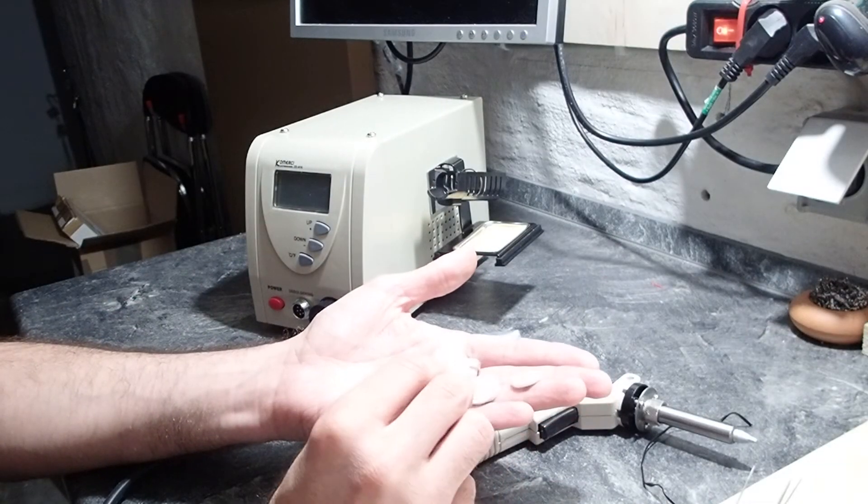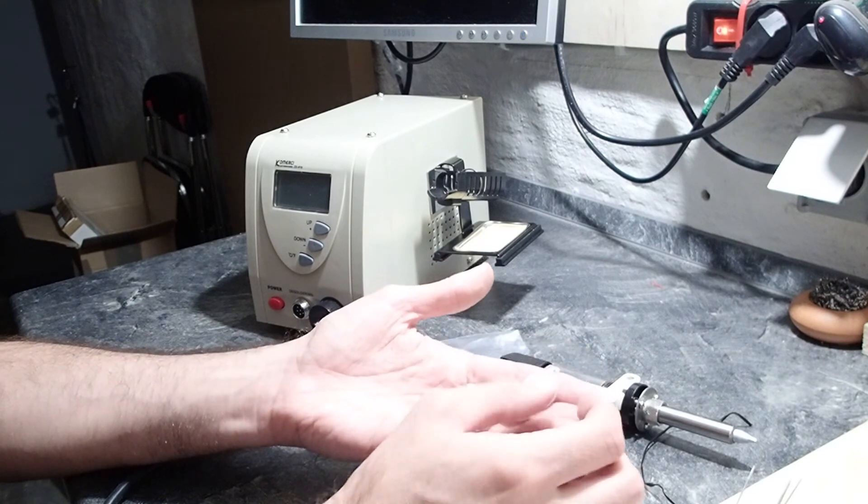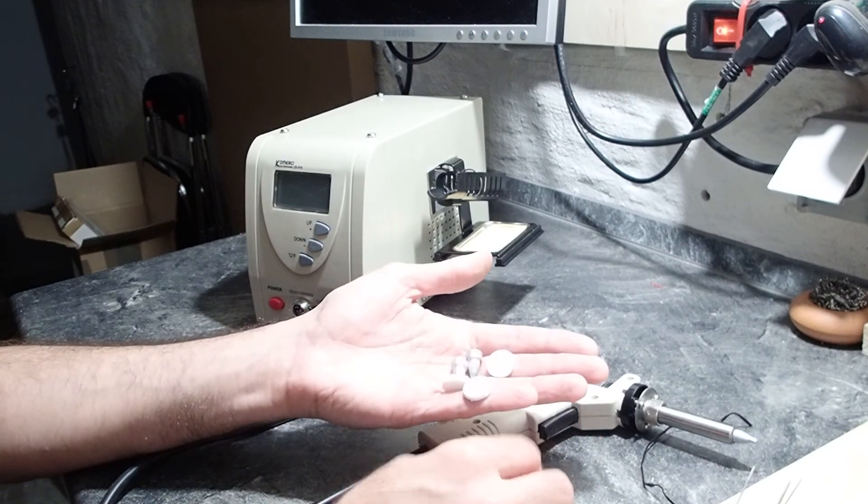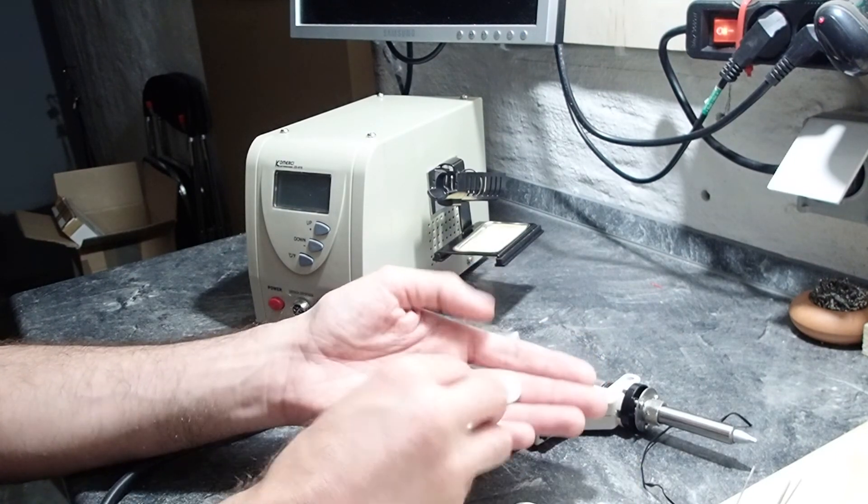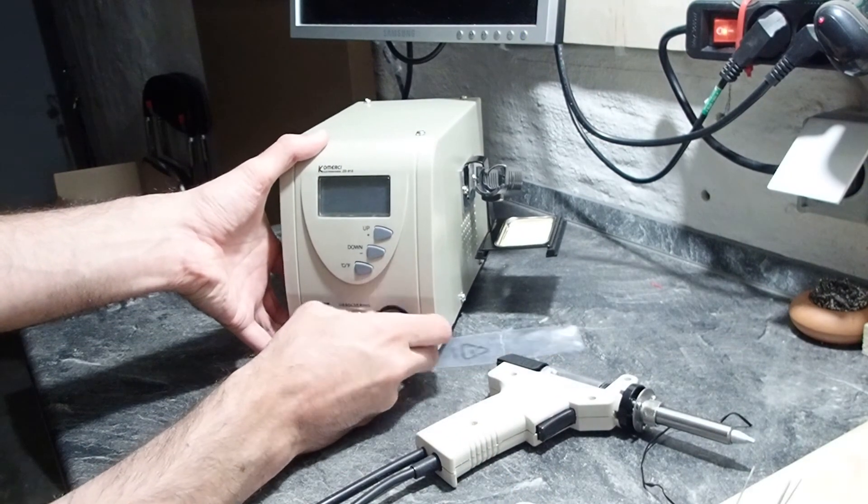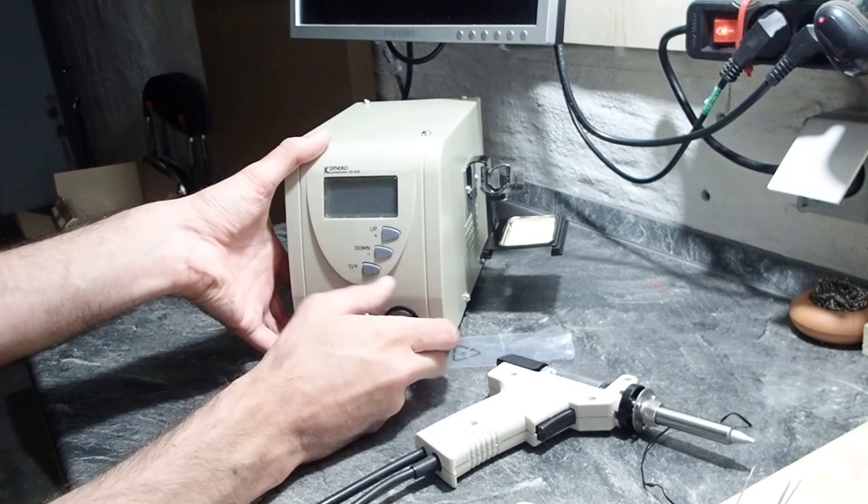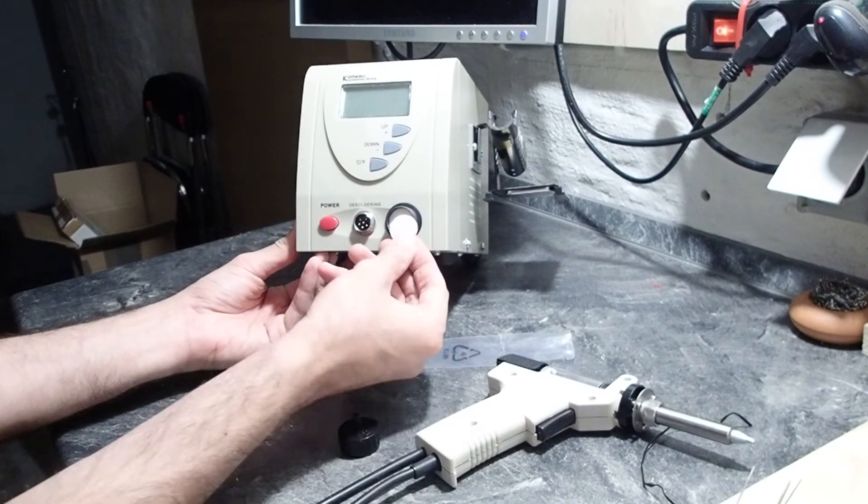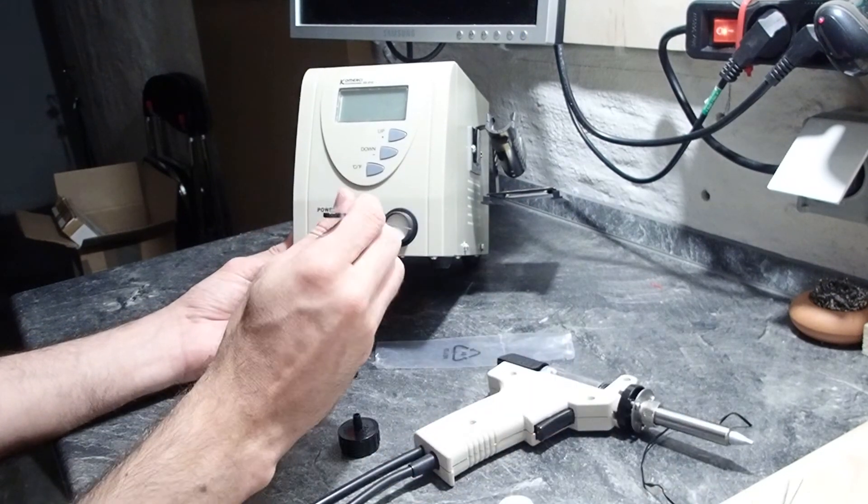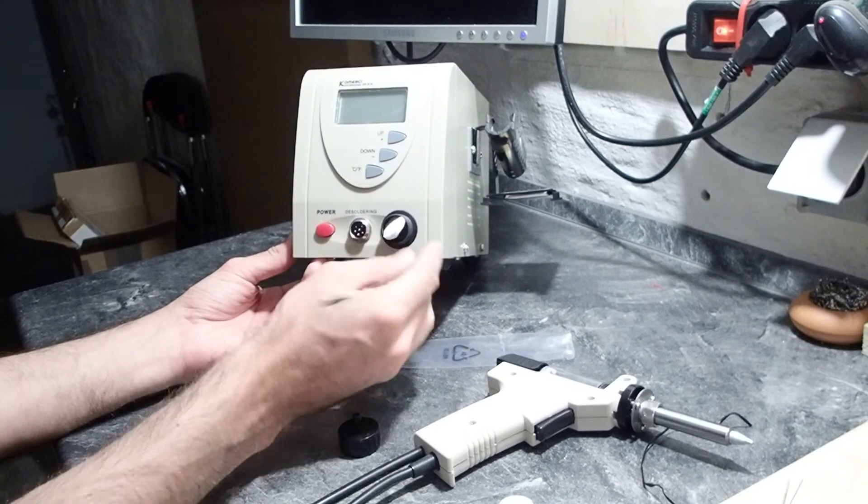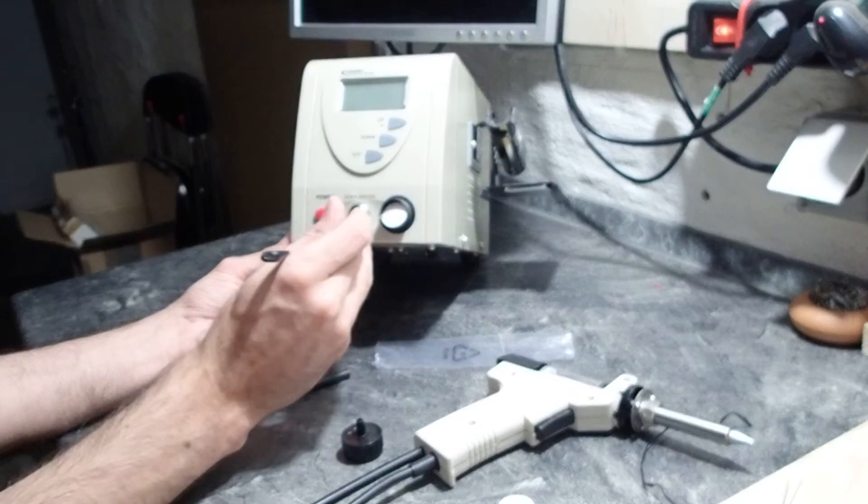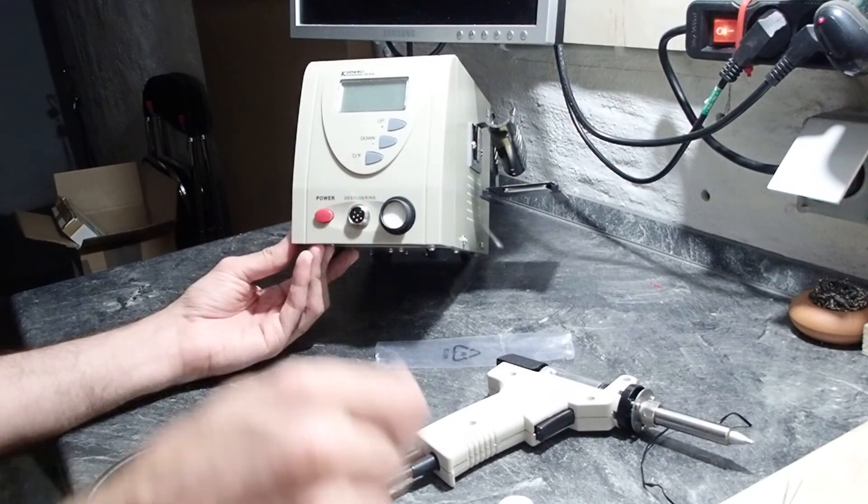What else do we have? We have some filters, different sizes. One is bigger than three smaller filters. I suppose that one bigger filter is going into the desoldering station. Yeah, it looks like it fits. So this one is just to keep the dirt out of the pump. Don't know how often I will have to replace this but we will see.